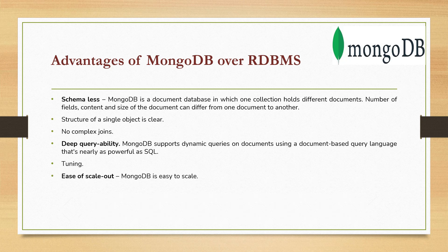Another advantage is ease of scale out. Scaling out in MongoDB is really easy. Using sharding you can do horizontal scaling — you have a cluster of machines, divide your huge data into different chunks, store every chunk on different servers, and based on what data is required, you query across different servers. That's how you improve performance and scale out your MongoDB application.